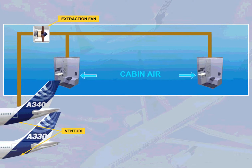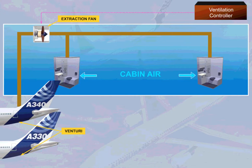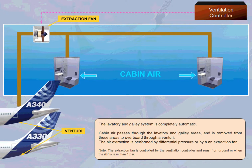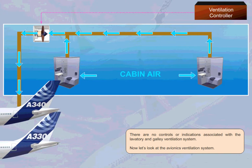Note: the extraction fan is controlled by the ventilation controller and runs on the ground or when the delta P is less than 1 psi. There are no controls or indications associated with the lavatory and galley ventilation system.